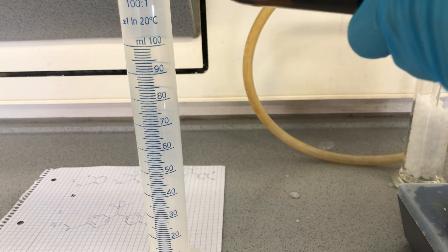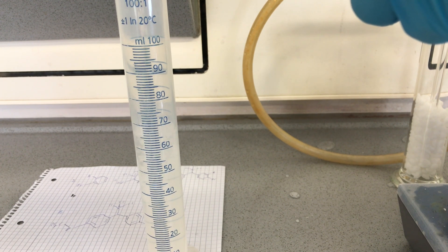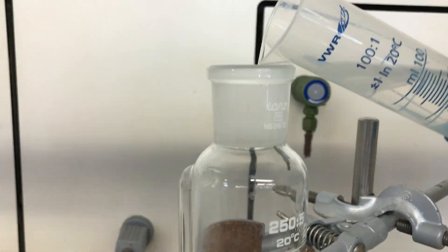The dichlorodimethylsilane was measured out, 100ml to be precise. Why do we have to do this under a fume hood? Well, when it hydrolyzes it releases hydrogen chloride vapors and you don't want to inhale those.